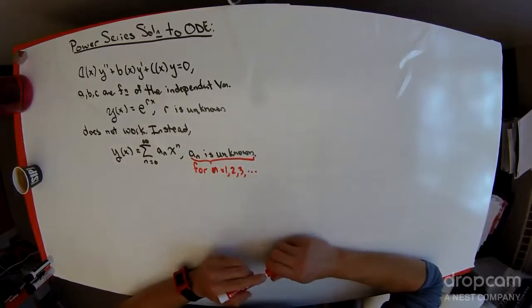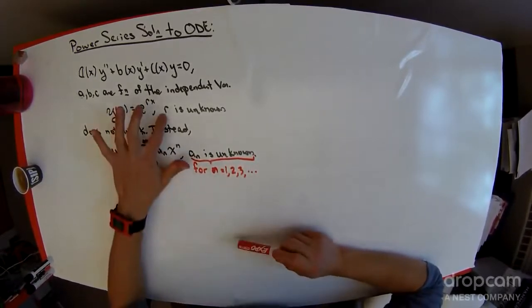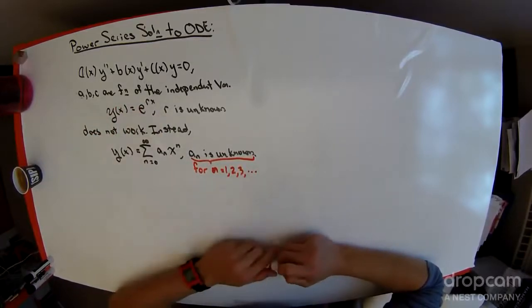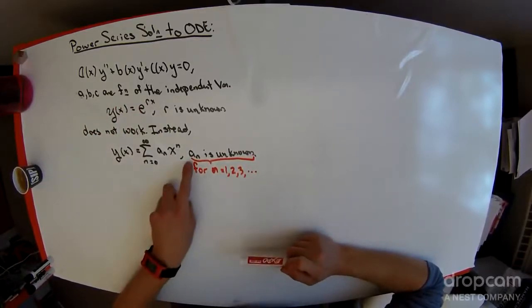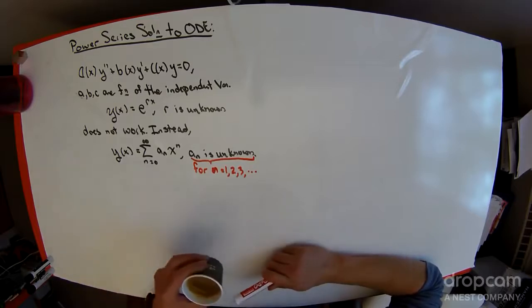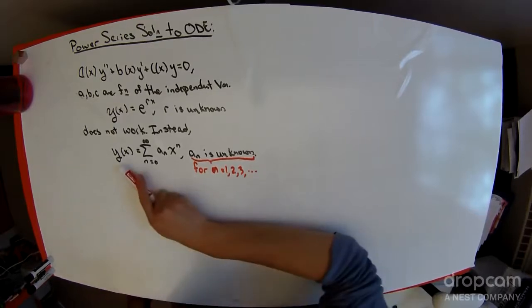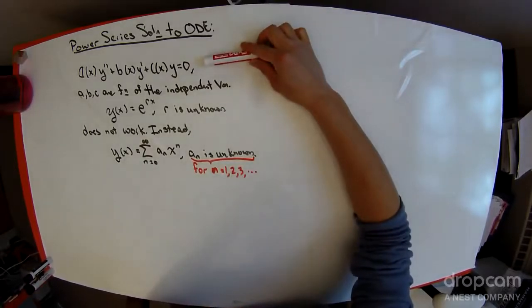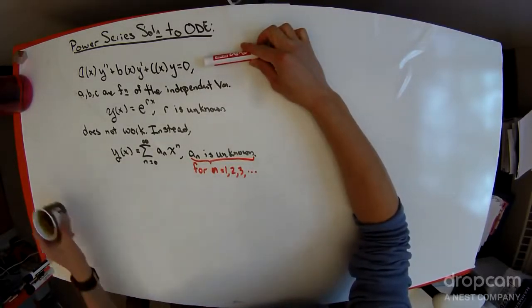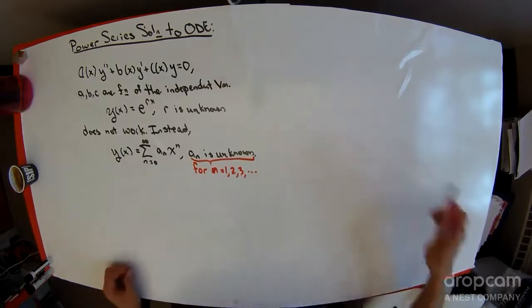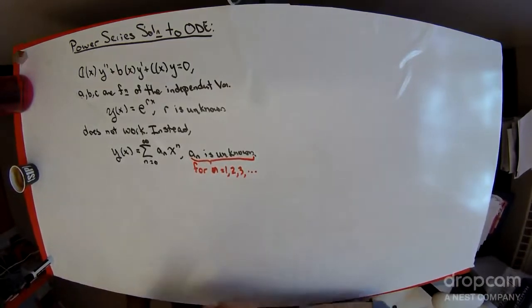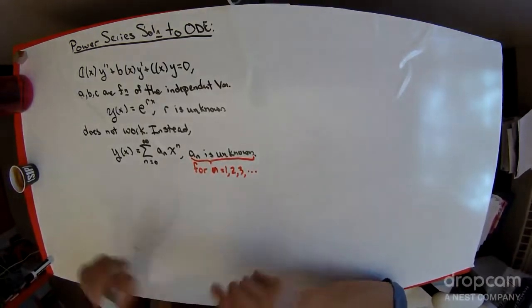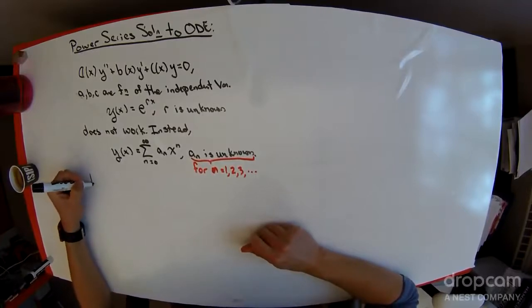This represents a very different problem. This r is unknown, and that's just one scalar that I'm trying to find. Here, I'm trying to find a countably infinite set of scalars, so that this y of x is in fact a solution to this ordinary differential equation. To illustrate this method and the bits that go into it, perhaps we should just start with an example.